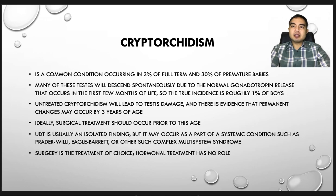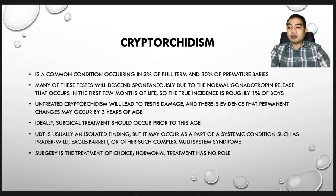The next common problem is cryptorchidism, a common condition occurring in 3% of full-term and 30% of premature babies. Many of these testes will descend spontaneously due to normal gonadotropin release that occurs in the first few months of life, so the true incidence is roughly 1% of boys.